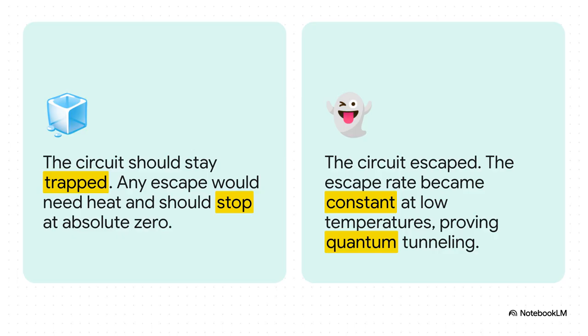See, in the classical world, the circuit should only be able to escape its little energy trap if it gets a kick from heat. So, as you cool it down toward absolute zero, the escape rate should drop and drop and drop to nothing. But that is not what they saw. The circuit did escape. And as they got colder and colder, the escape rate flattened out. It became constant. That flat line on the graph, that was the smoking gun. An escape that doesn't care about temperature can only be quantum tunneling. They had caught their ghost.